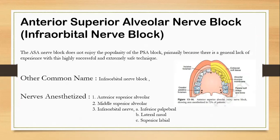The anterior superior alveolar nerve block — also known as the infraorbital nerve block — is the second most common nerve block for the maxillary teeth. It is very technique-sensitive; you must first palpate the infraorbital foramen before giving the block. The nerves anesthetized include the anterior superior alveolar nerve, the middle superior alveolar nerve, and the infraorbital nerve, which divides into the inferior palpebral, lateral nasal, and superior labial branches. After giving this block, you ask the patient for numbness in the lower palpebral, lateral nasal, and upper lip areas.